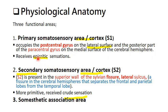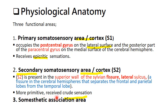S1 receives epicritic sensations. The S2 area, the secondary somatosensory area, is present in the superior wall of the sylvian fissure, the lateral fissure, which separates the frontal and parietal lobe from the temporal lobe. S2 is more primitive and receives only crude sensations.